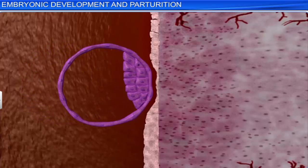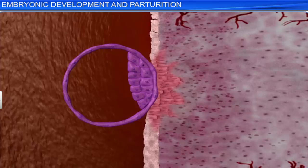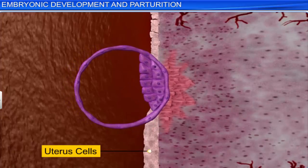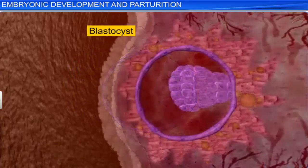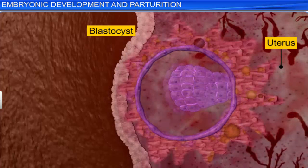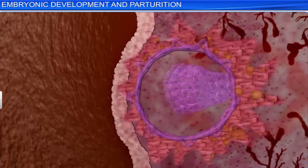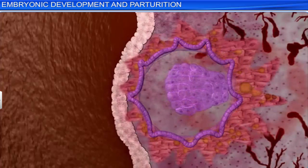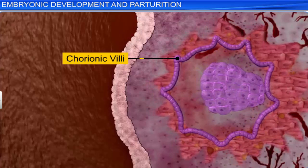After implantation, the trophoblast grows further, which causes the blastocyst to sink in and get covered by the cells of the uterus. As the blastocyst sinks further into the uterus, finger-like projections called chorionic villi start appearing on the trophoblast.